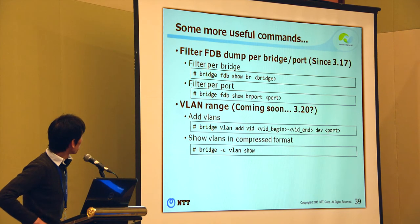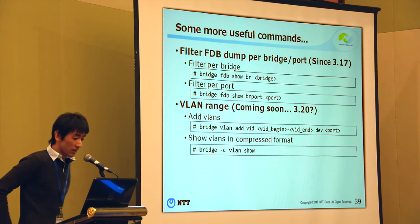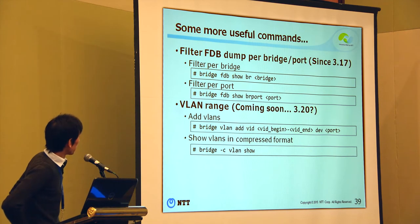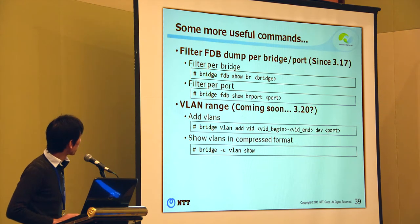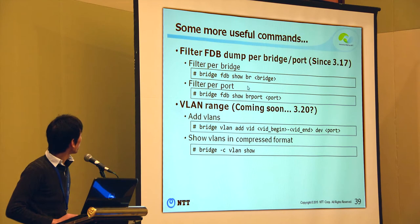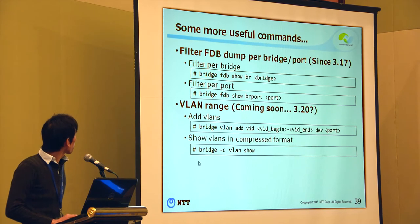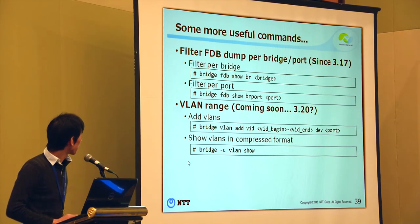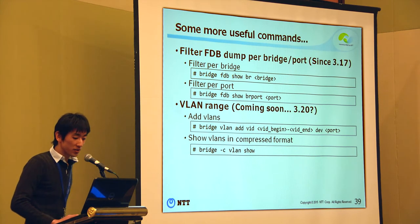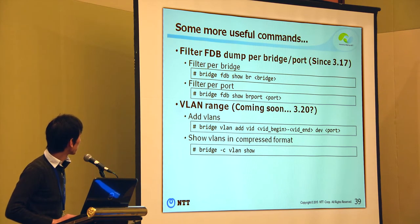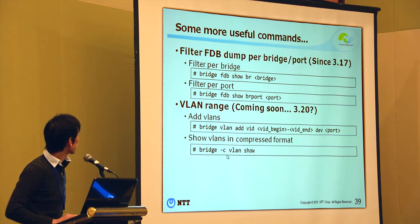There are some more useful and recent commands. The first is filtered FDB dump per bridge or per port. You can filter FDB entries per bridge using the 'br' keyword, and filter per port using the 'brport' keyword. VLAN range is implemented in kernel 3.20 RC. You can add multiple VLANs at once and show VLANs in a compressed format.